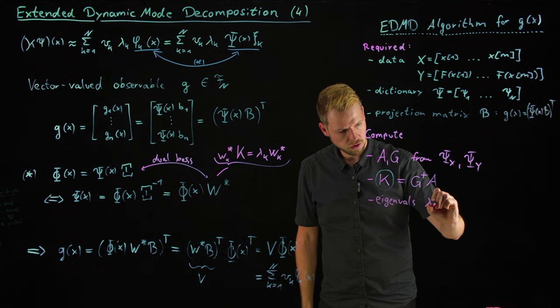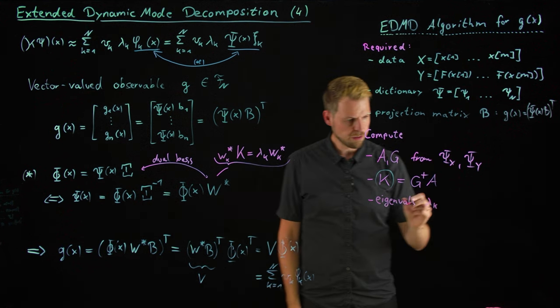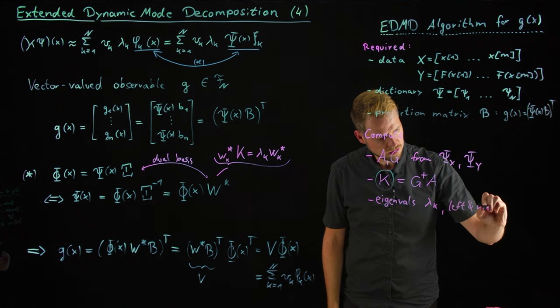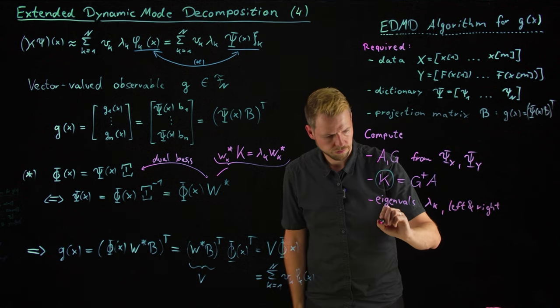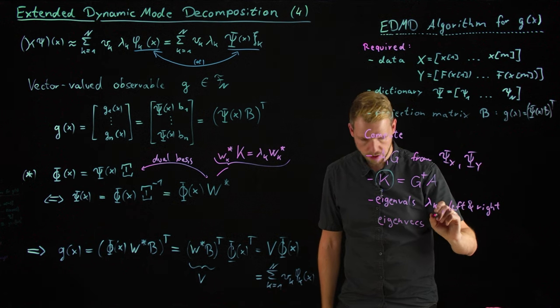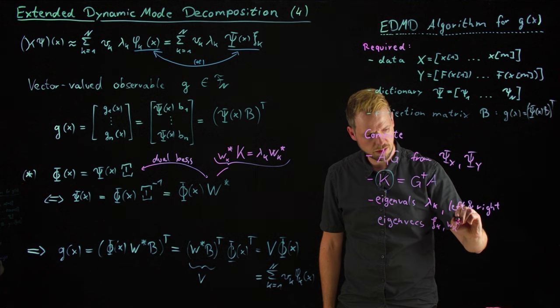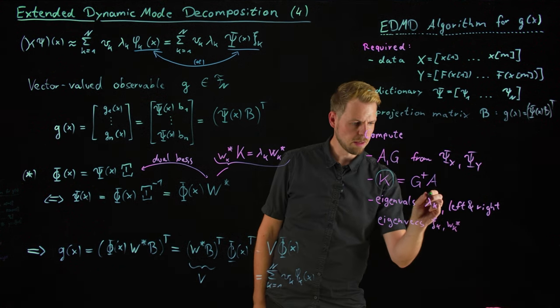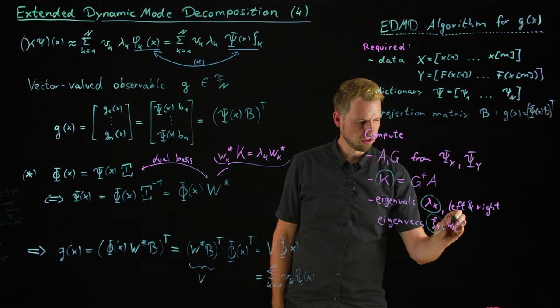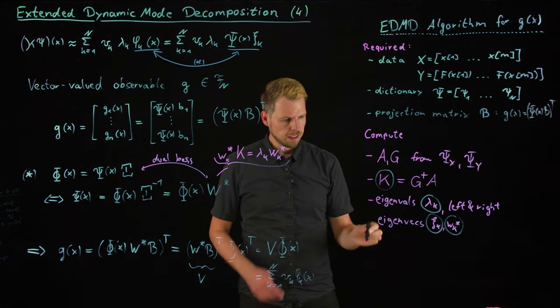And then, this is the first part that's really important, the K matrix. Then we continue to solve an eigenvalue problem. We start with the eigenvalues, N of them which is the dimension, and then left and right eigenvectors, N of them, which we denote by psi k and W k star. So these are the next quantities. We have the K matrix, then using the K matrix, we get the eigenvalues and we get an eigen decomposition in terms of right eigenvectors and left eigenvectors.